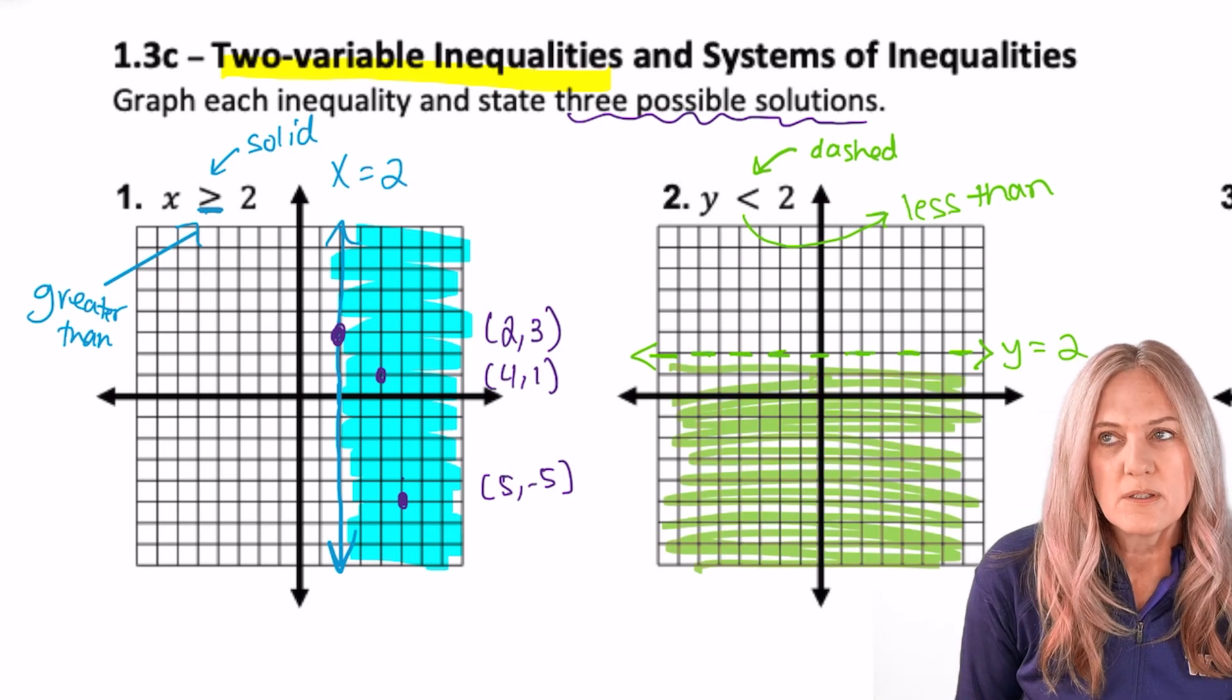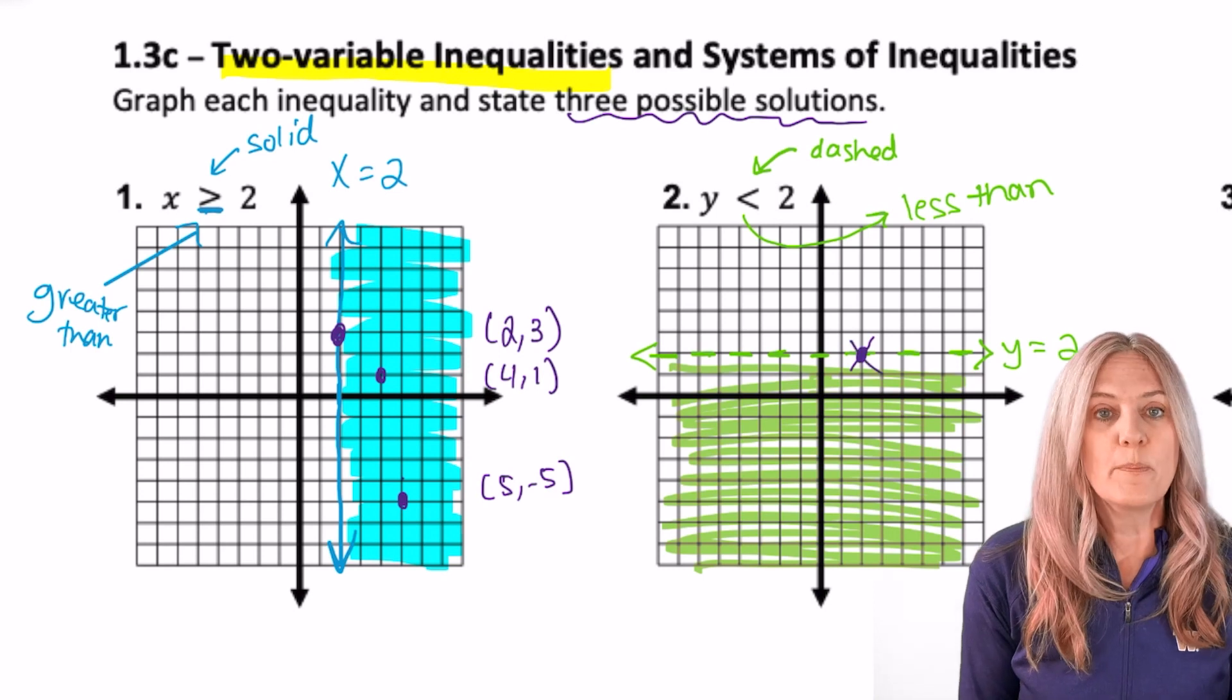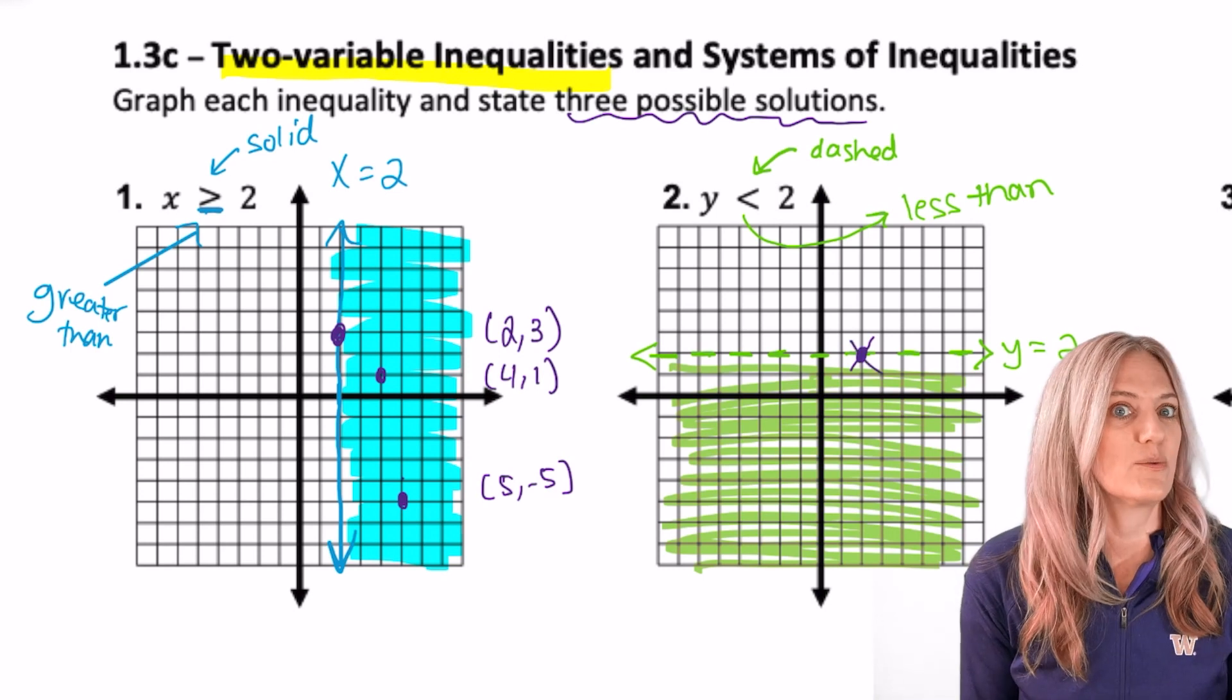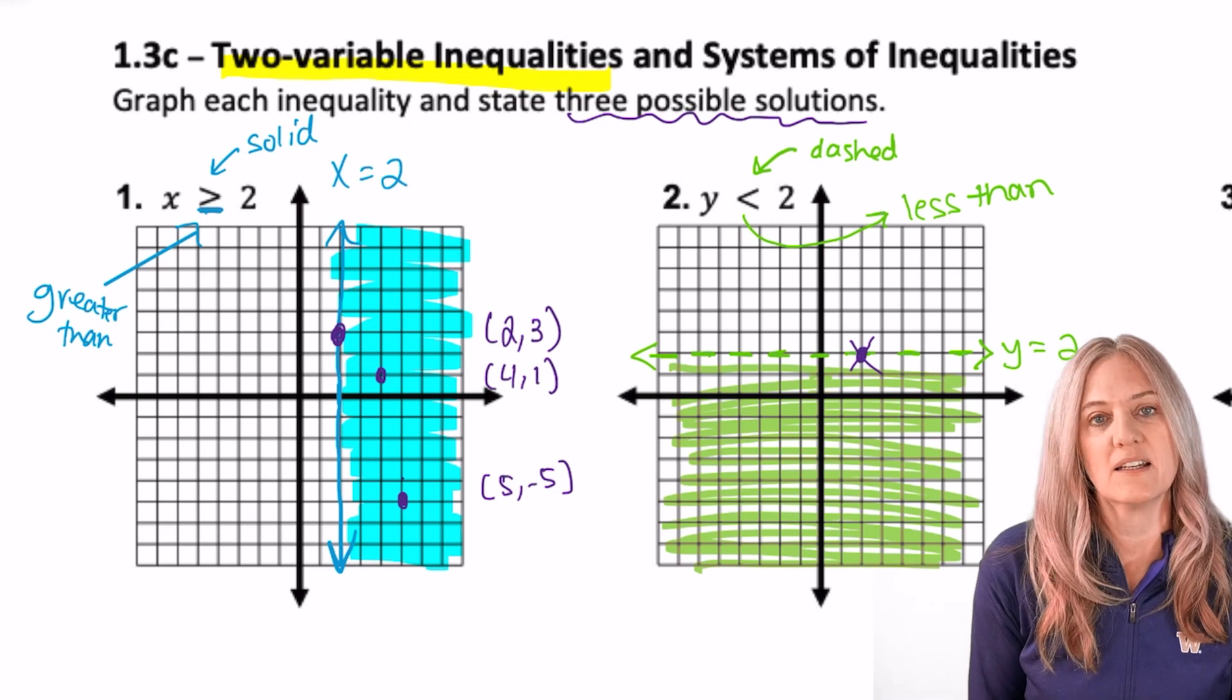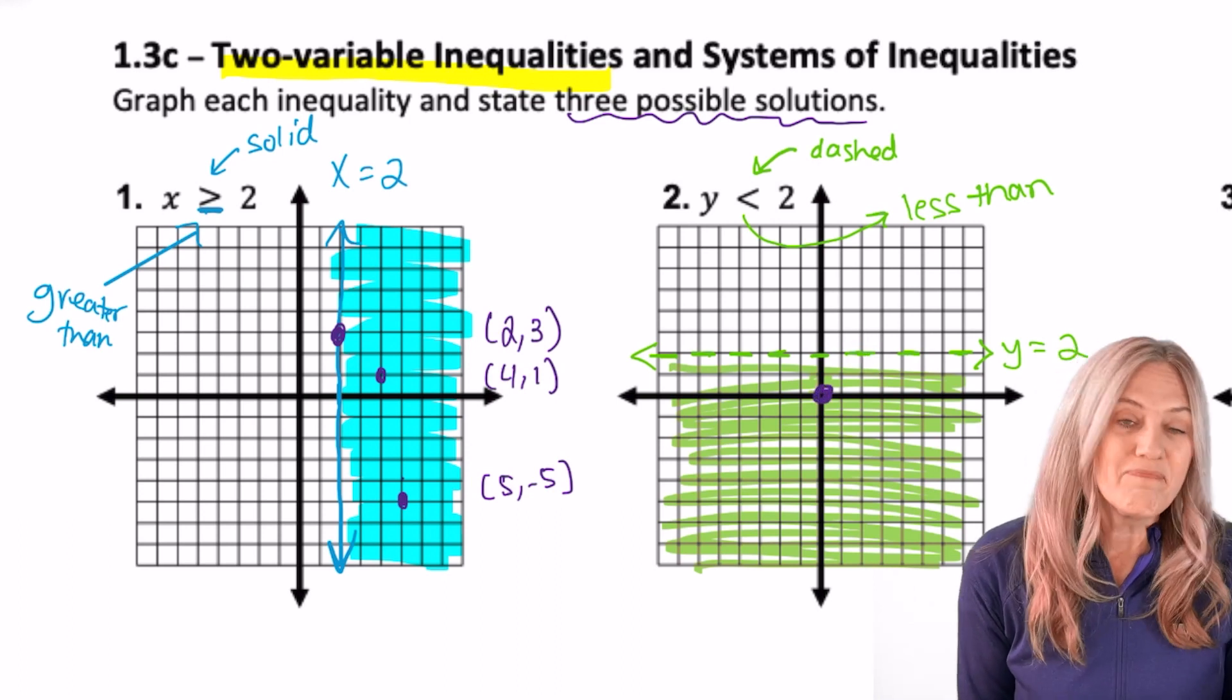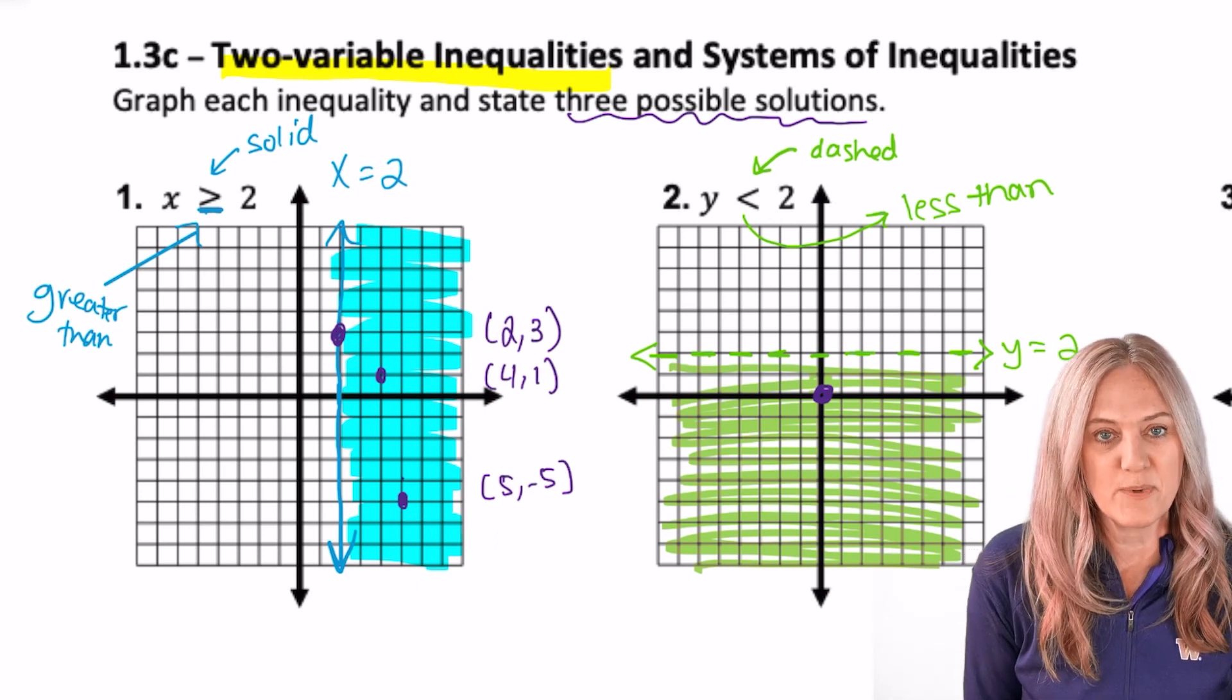Three possible solutions. Well, how about 2, 2? Ah, no, because this was less than 2, not less than or equal. So I can't take any point on that line. All right, how about the origin? 0, 0. That works. Just pick two other points in that shaded region.